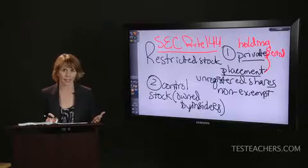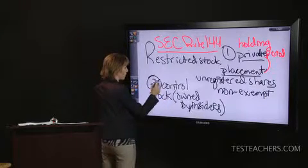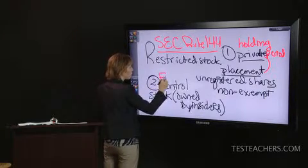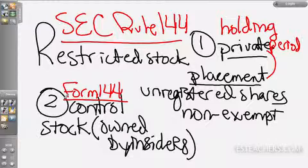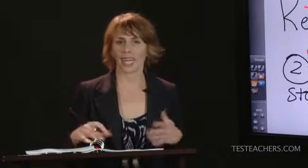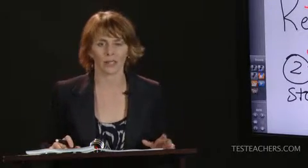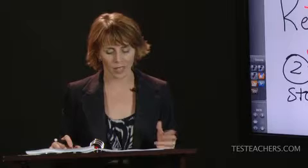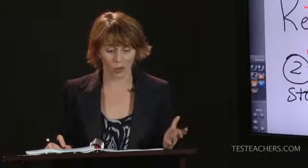Form 144 is good for 90 days. So when you have control stock, when you're an insider, you file Form 144 and are limited as to how many shares you can buy or sell during that 90-day period. This is publicly accessible information — you can read about insider trades online or in your favorite financial newspaper. It's always interesting to wonder what it is they might know that we don't.